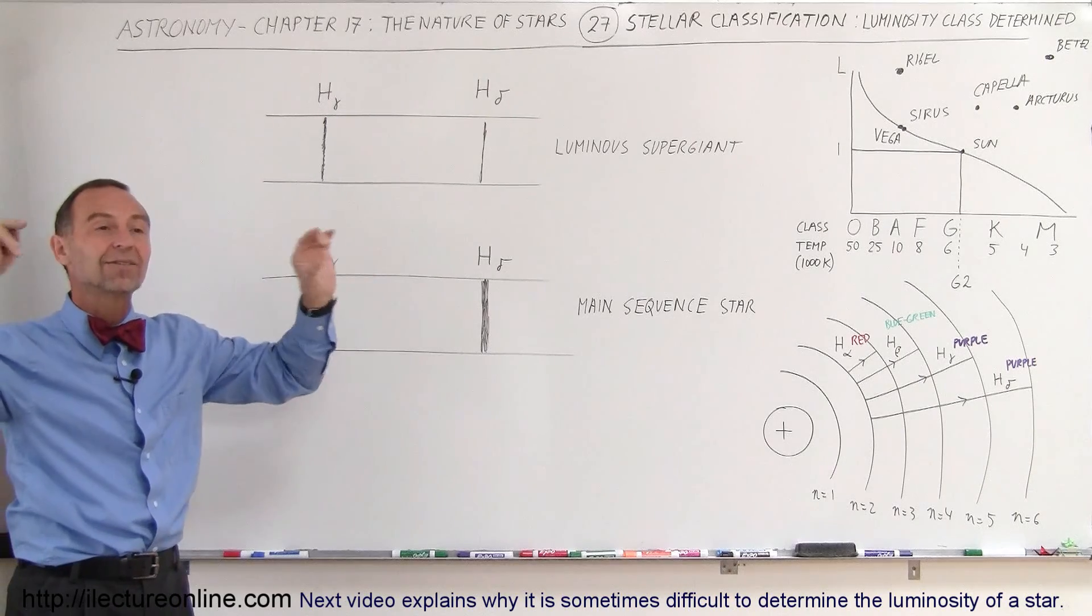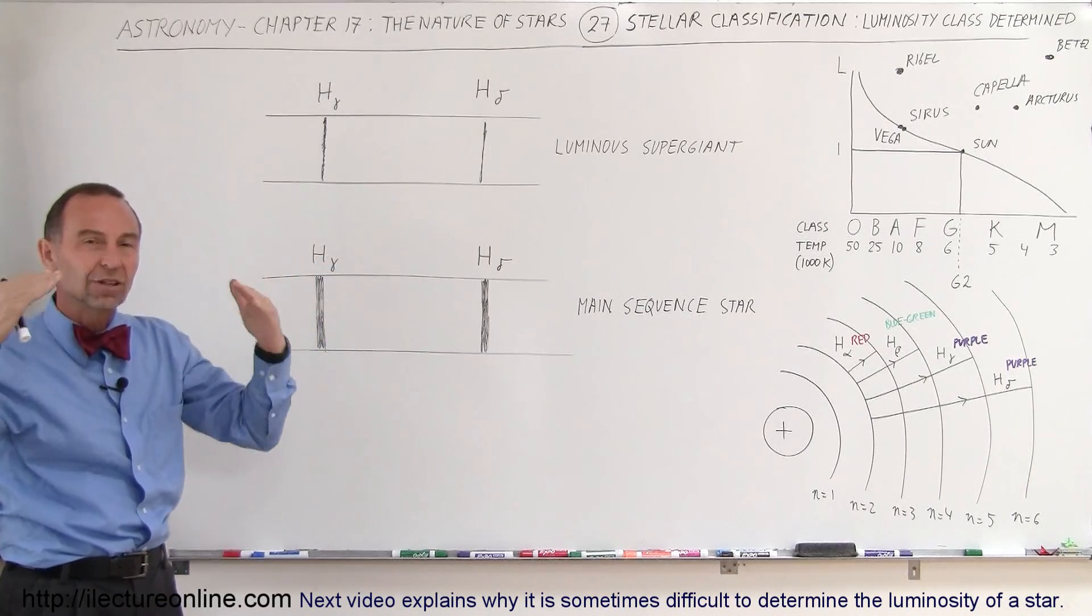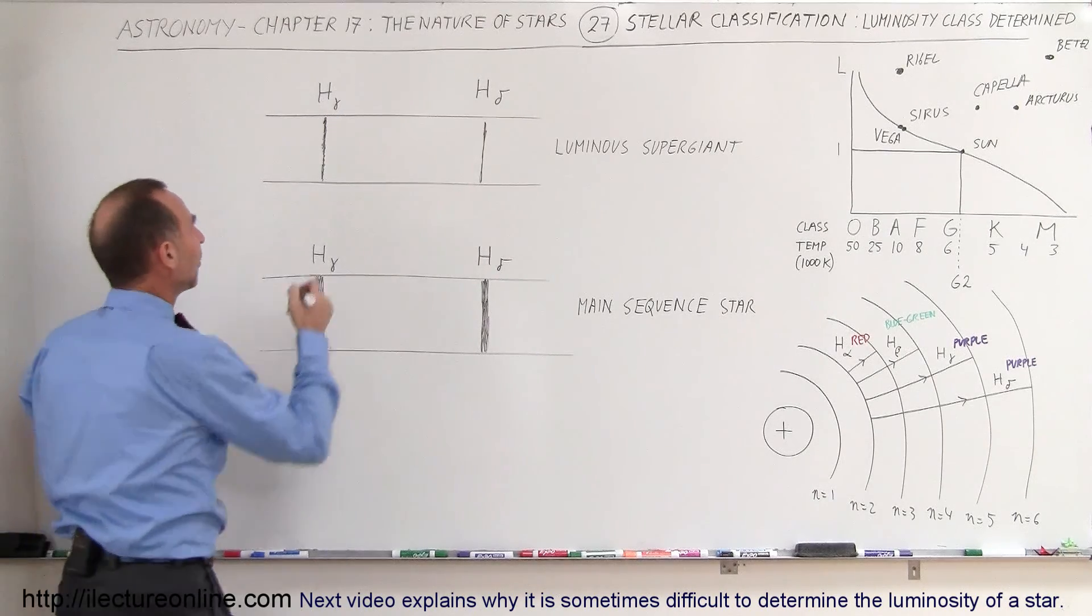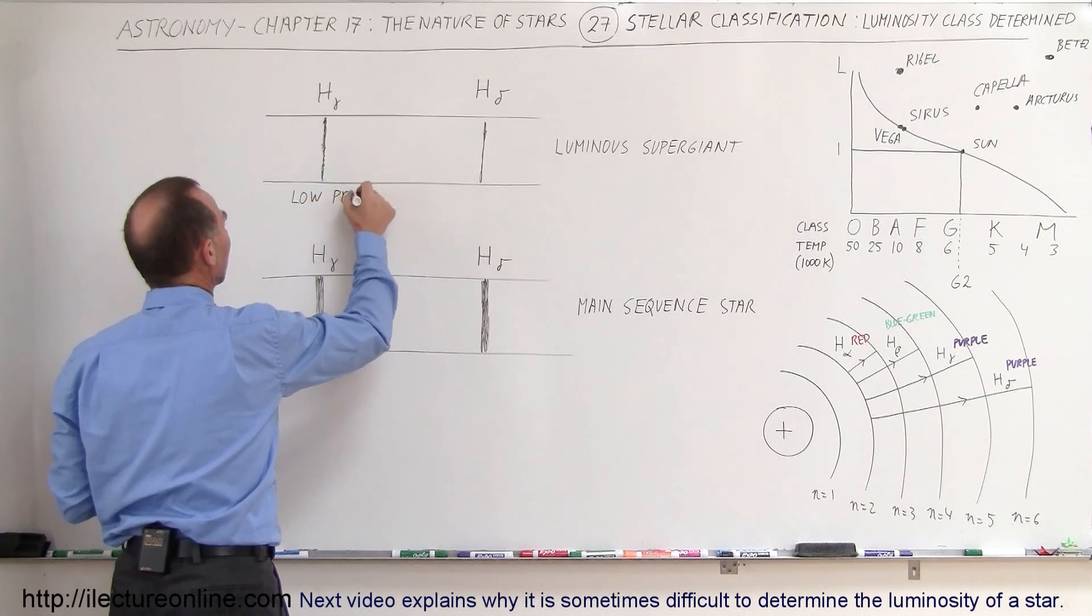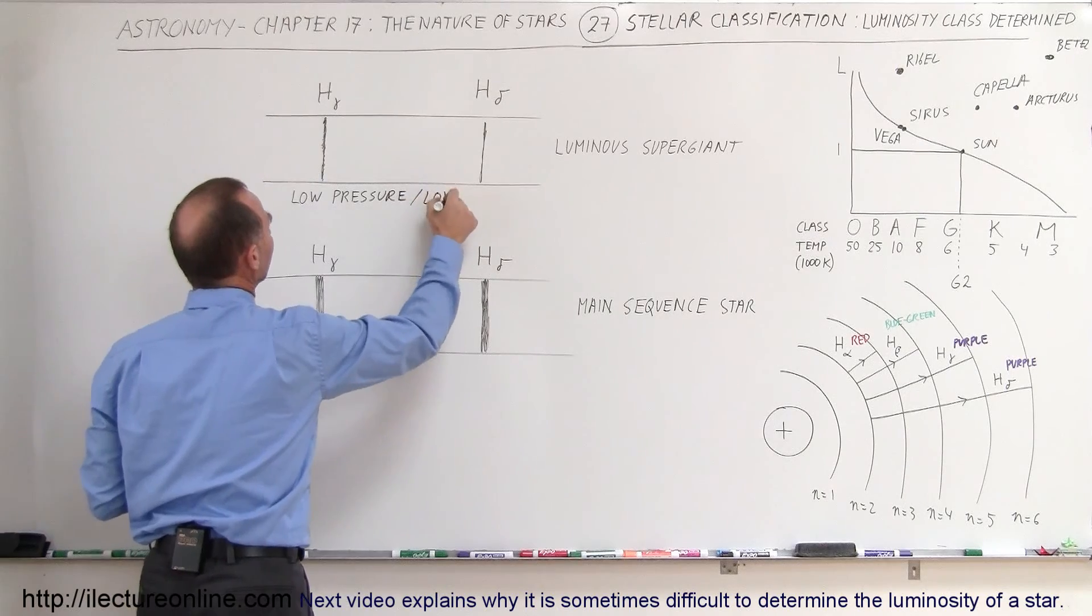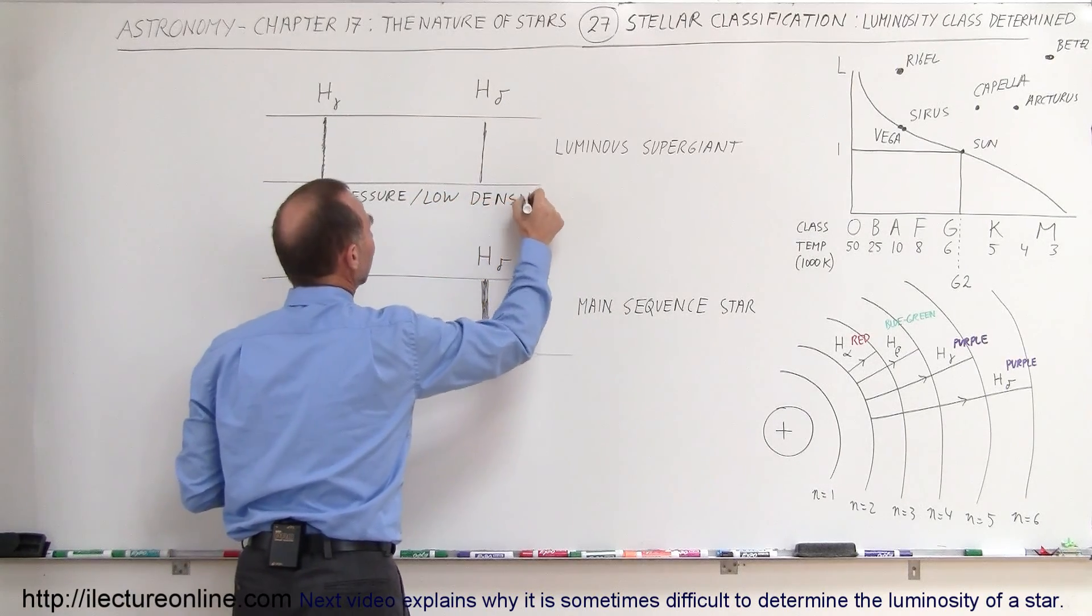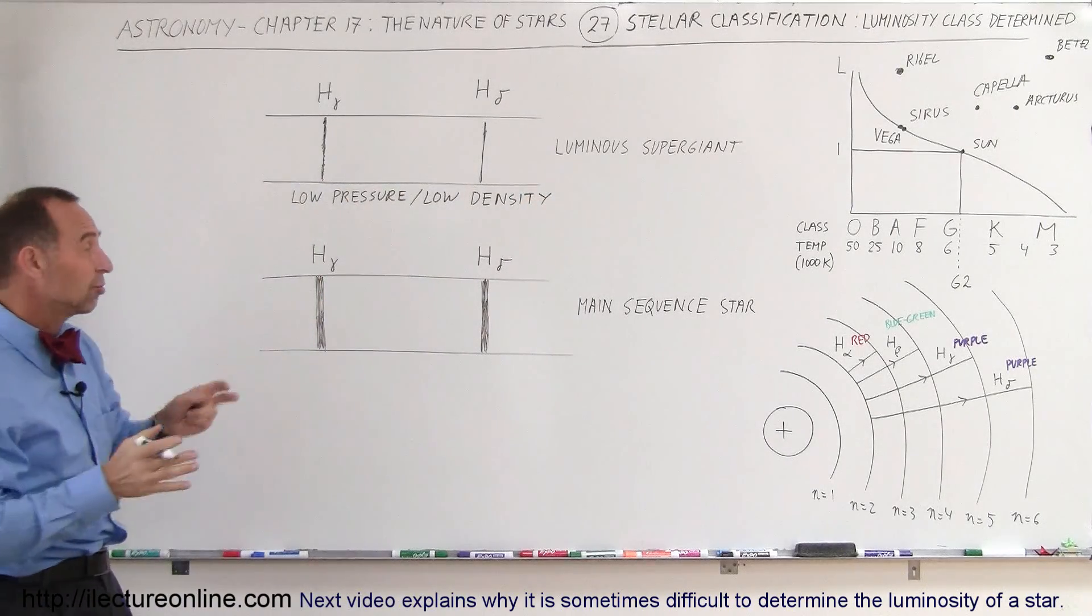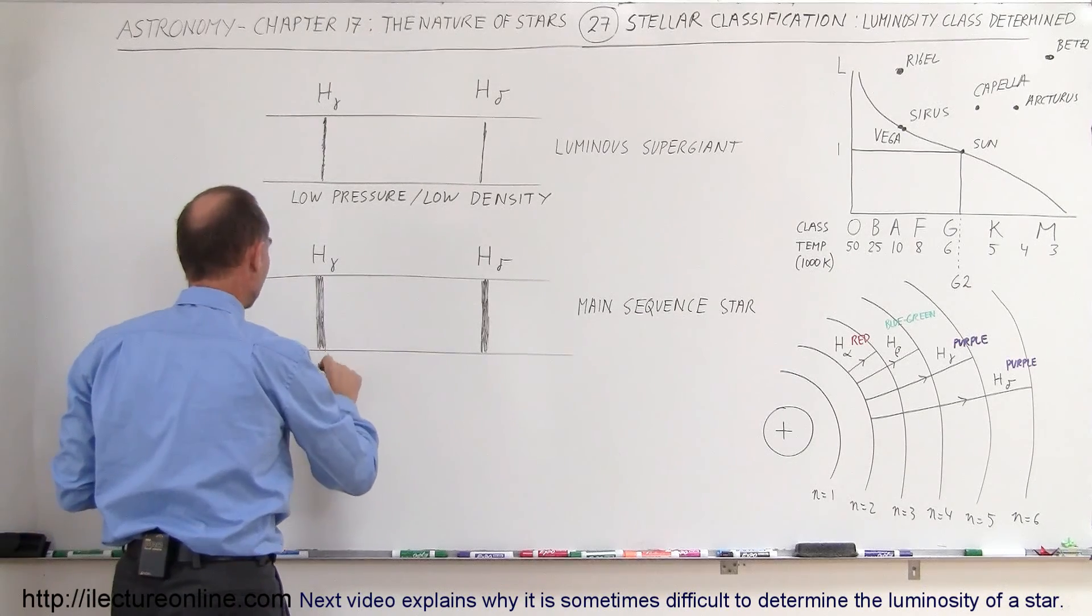A red giant is enormous in size and the layers on the outside where the photosphere is, where you can see the surface of the star, they're very tenuous. So we have very low density, low pressure gases at the surface. The result of that is that the signature in the spectral lines is much less pronounced than when we have stars like on the main sequence where we have high pressure and high density.